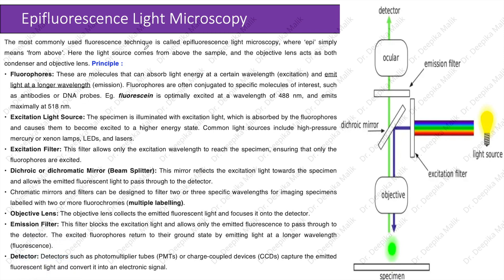Now let us see the principle and working of epifluorescence light microscopy. The most commonly used fluorescence technique is called epifluorescence light microscopy, where 'epi' simply means 'from above.' Here the light source comes from above the sample, and the objective lens acts as both condenser and objective lens.